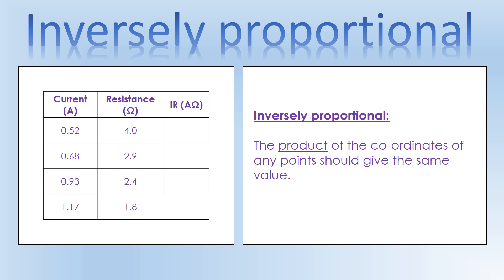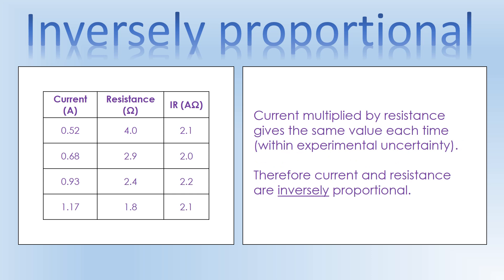For every single row in our table we're going to calculate what current times resistance is - this is how we execute testing for inverse proportionality using data. I've picked current and resistance as an example, and we're going to do current times resistance, which has units of amp-ohms.